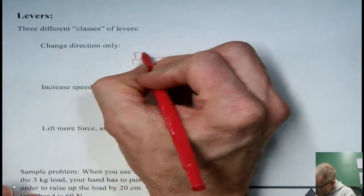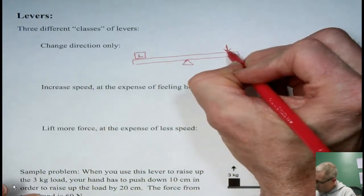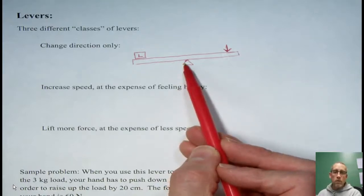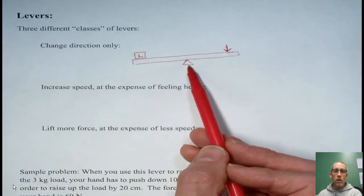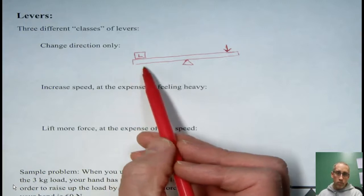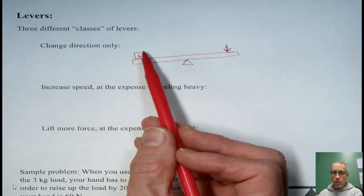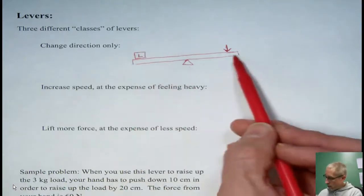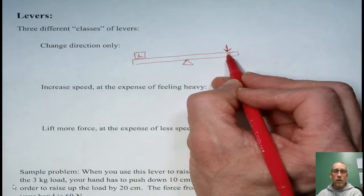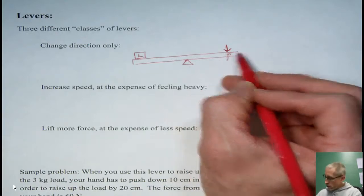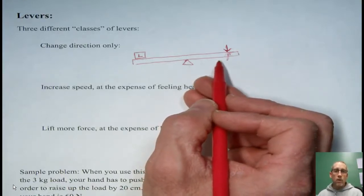So say we have the load here on one end and the effort here on the other end. If the fulcrum is right in the middle of those two then the only function that this lever has is it allows us to change the direction of the push. Normally if we want to lift a load up we have to pull or push up. And that can be really hard on the muscles or maybe it's just up too high. But if we can instead push down on this end of the lever then it just makes it much easier to do that. So there's no advantage in terms of how far we're moving it or how heavy it feels. It's just a change in the direction.